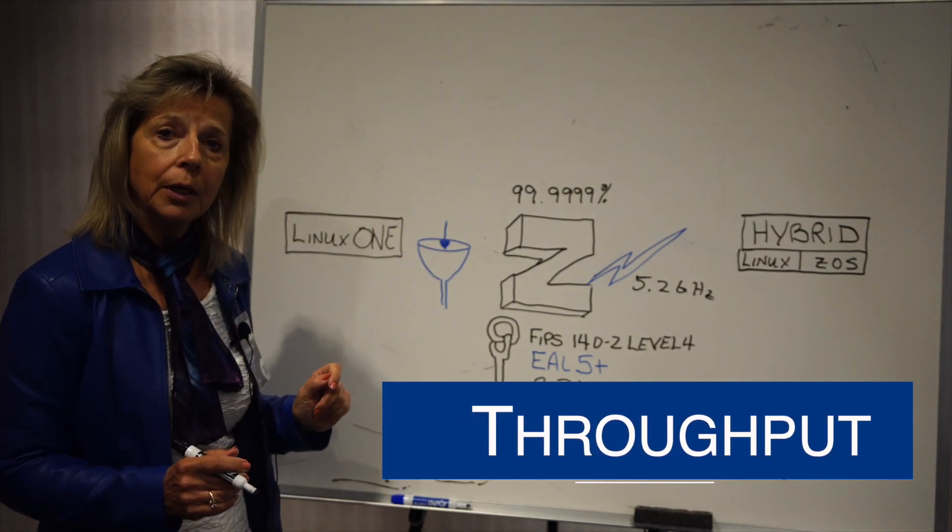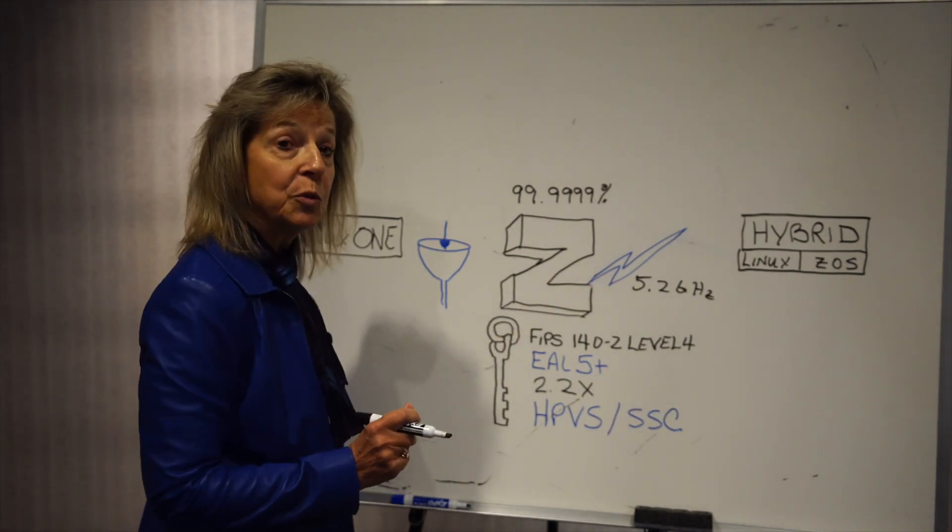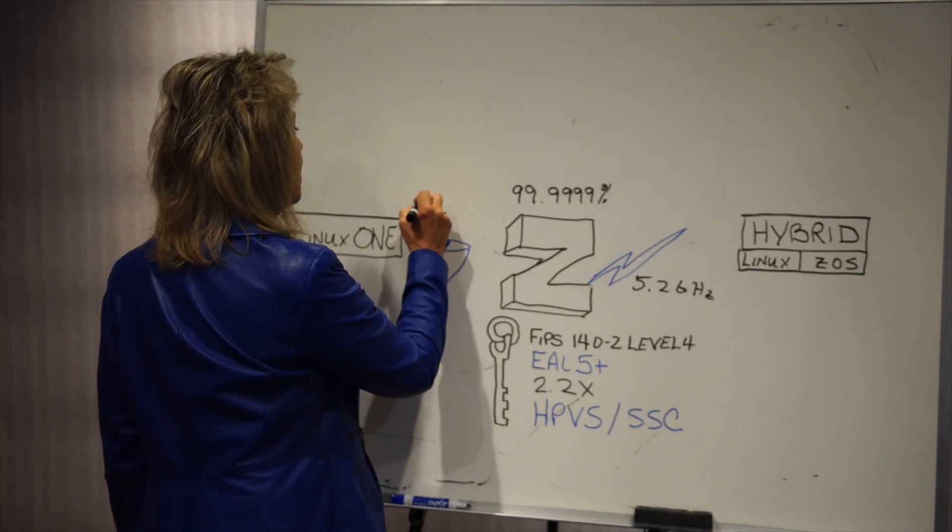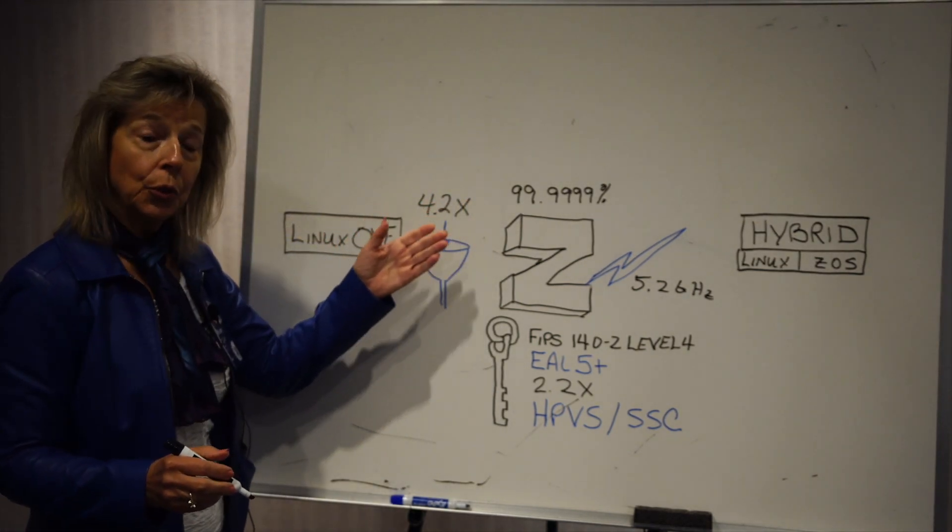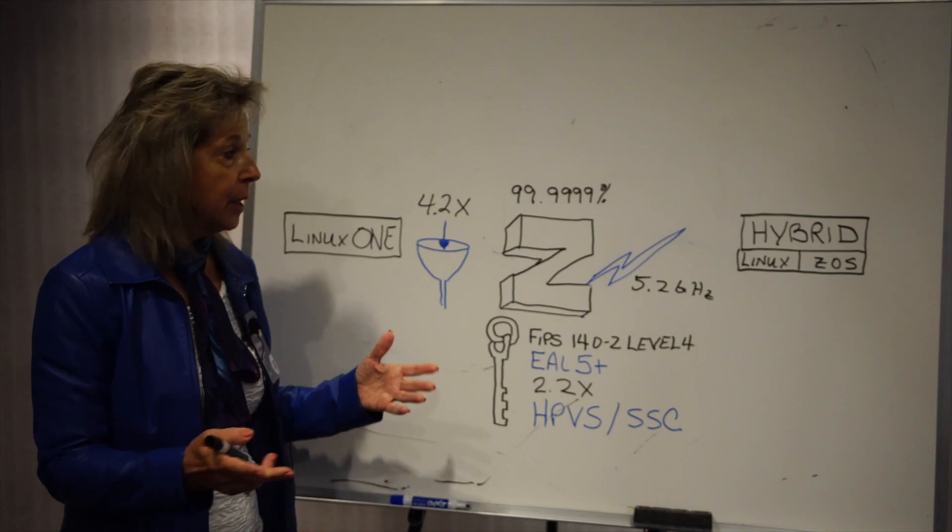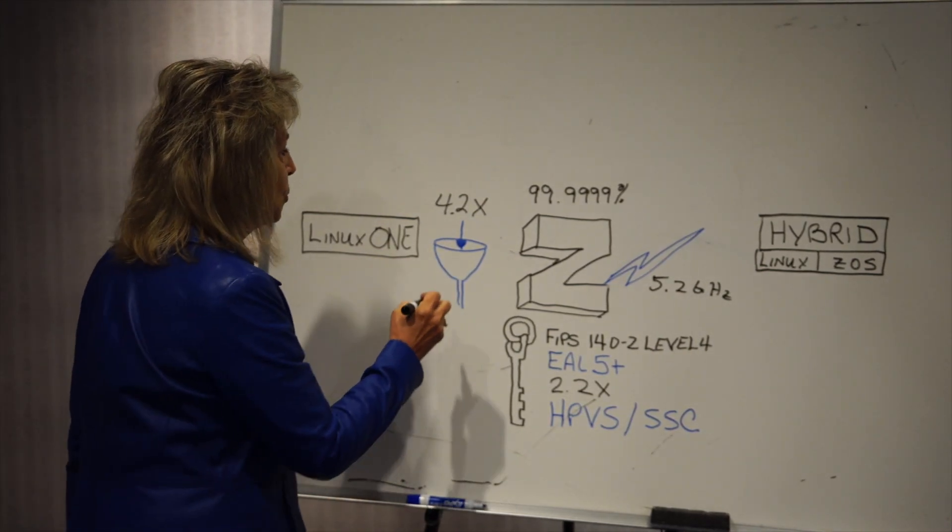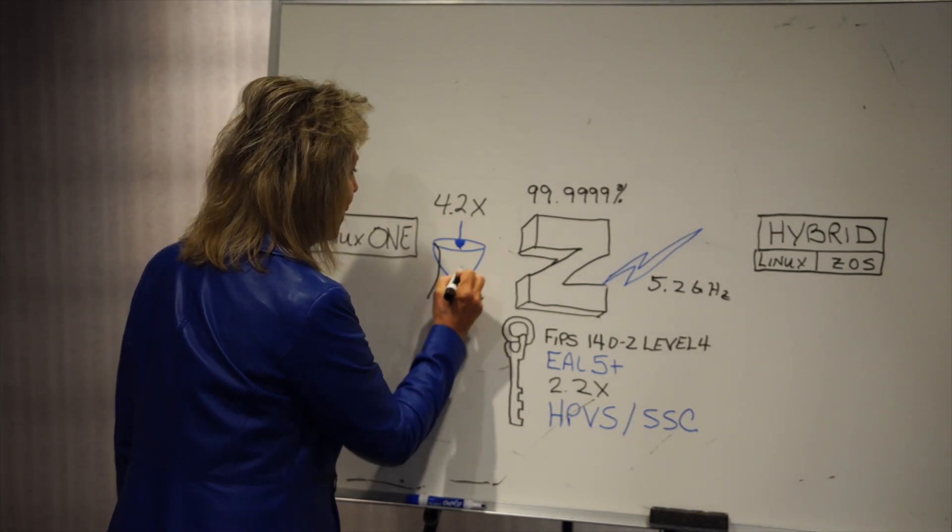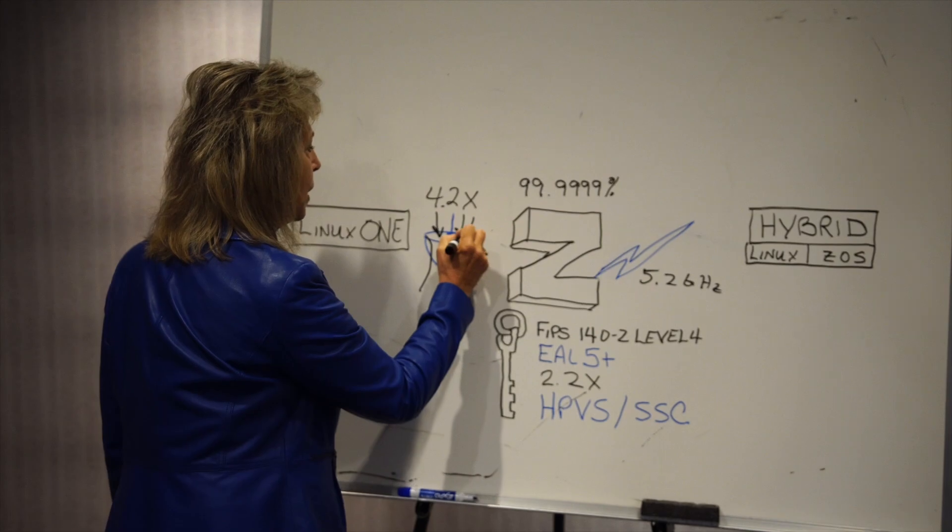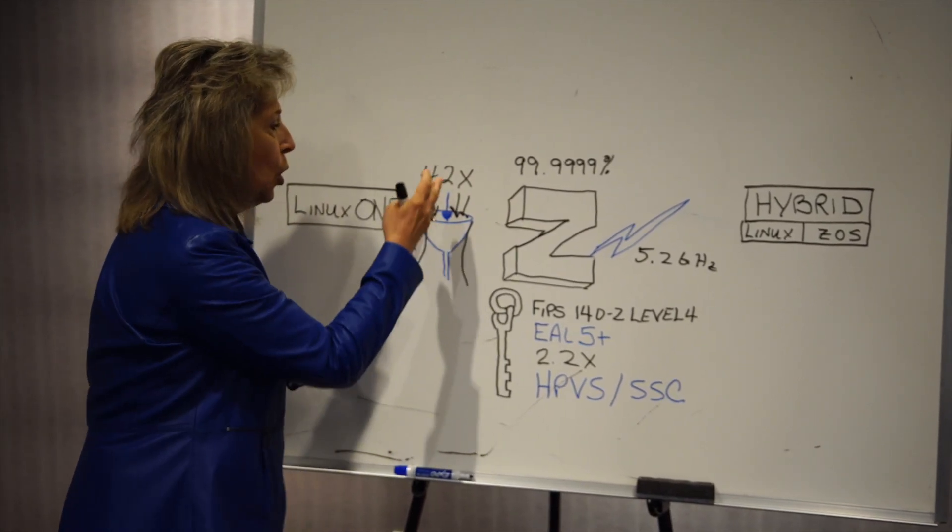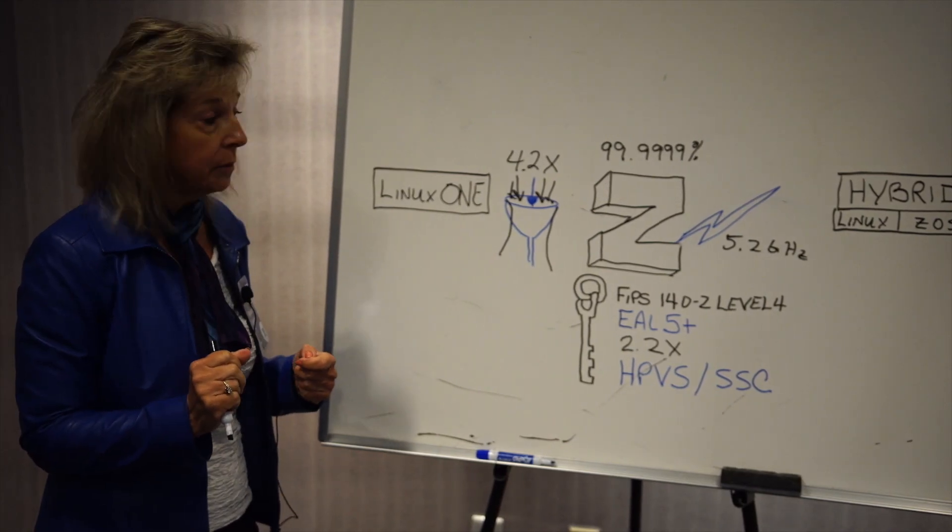Another component is the throughput. Now we've talked about the speed of the core but what about the throughput? The 4.2 throughput is over the x86 environment. So what does that mean? It means that we can have a funnel of more than 4.2 workload through the IBM Z compared to an x86 environment.